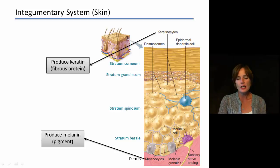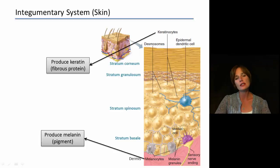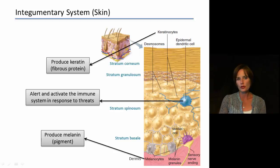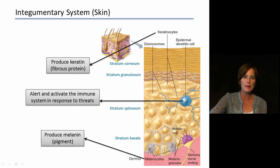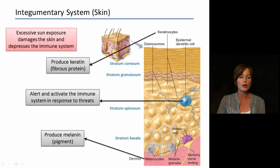The last cell type to point out is the epidermal dendritic cell, shown in blue in the middle. These are responsible for alerting and activating the immune system in response to threats — this is one thing the integumentary system does as well, alerting and responding to attacks by pathogens such as bacteria. When we have excessive sun exposure, it is not only able to damage individual cells in the skin but also lowers our immune system, making us more susceptible to pathogens attacking our bodies.